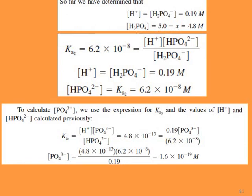The proton concentration equals [H₂PO₄⁻] = 0.19 mol/L, and the remaining phosphoric acid concentration is approximately 4.8 mol/L. For KA2 = 6.2 × 10⁻⁸, substituting concentrations gives [HPO₄²⁻] = KA2 = 6.2 × 10⁻⁸ mol/L. For the phosphate ion, using KA3: [PO₄³⁻] = (4.8 × 10⁻¹³ × 6.2 × 10⁻⁸) / 0.19 = 1.6 × 10⁻¹⁹ mol/L.